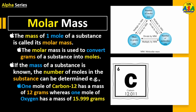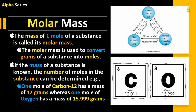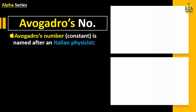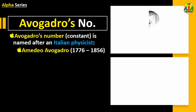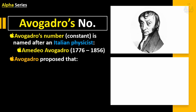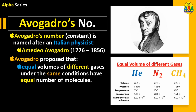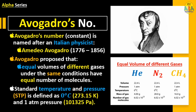One mole of oxygen has a mass of 15.999 grams. Avogadro's number, also known as Avogadro's constant, is named after the Italian physicist Amedeo Avogadro. Avogadro proposed that equal volumes of different gases under the same conditions have equal numbers of molecules. Standard temperature and pressure (STP) is defined as zero degrees Celsius, which is 273.15 Kelvin, and 1 atm pressure, which equals 101,325 Pascals.